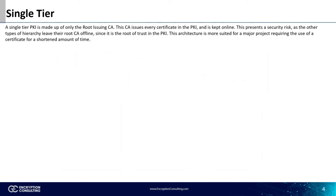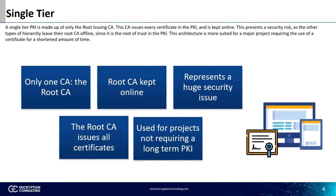The first model we'll take a look at is the single-tier. This tier is made up of only one CA, the root CA. This certificate authority acts as the root and issuing CA in the organization, and thus must be kept online. The reason other models keep it offline is due to its role as the center of trust in a PKI. If the root certificate authority is compromised, so are all of its certificates.